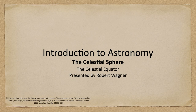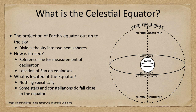Greetings and welcome to the introduction to astronomy. In this week's discussion on the celestial sphere, we are going to talk about the celestial equator and what that looks like in the sky. The celestial equator is the projection of Earth's equator out onto the sky. If you imagine Earth's equator being stretched out as far as it could possibly go, where it intersects the sky would be the celestial equator.